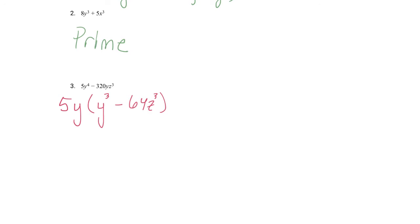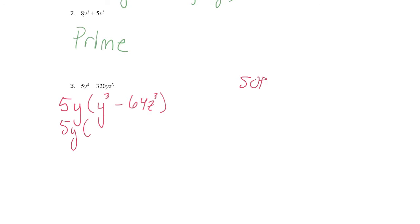So y cubed is a perfect cube. 64 is a perfect cube — 4 times 4 times 4. z cubed is a perfect cube again. So now we have the difference of two cubes, and we're going to use the SOP method. 5y stays where it's at. a is going to be y, the cube root of our first perfect cube. b is going to be 4z, the cube root of our second perfect cube.